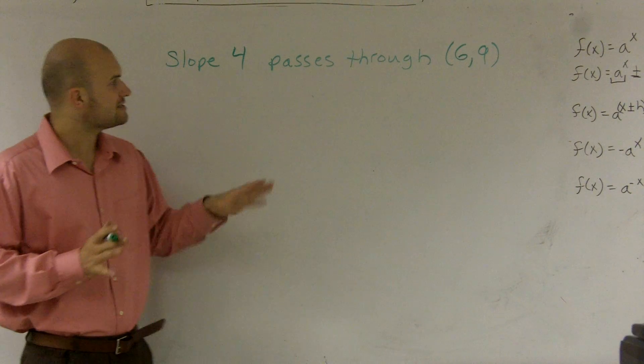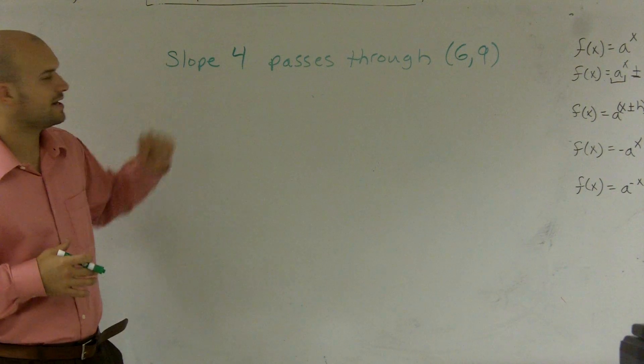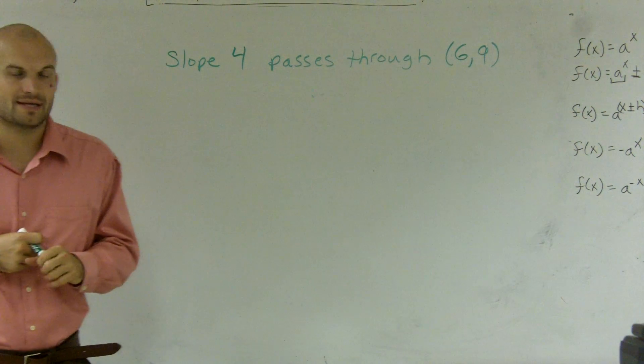All right, what I'd like to do is show you how to find the equation of a line when given the slope of 4, which goes through the point 6 comma 9.